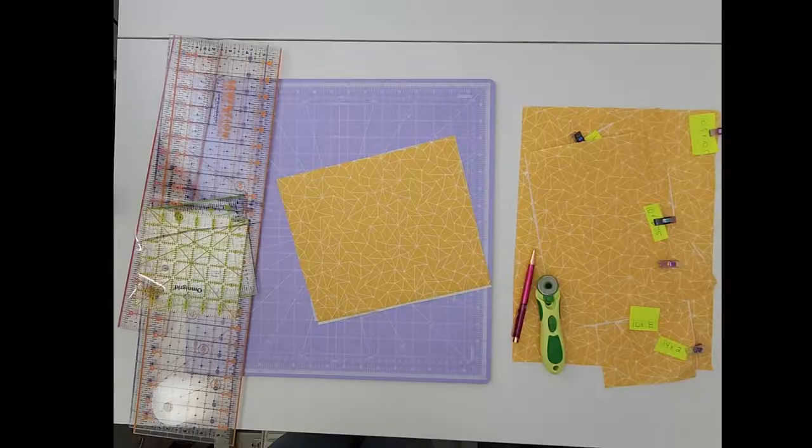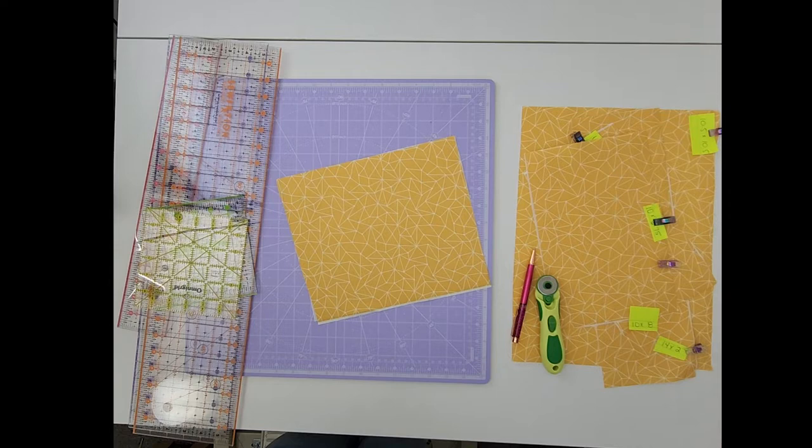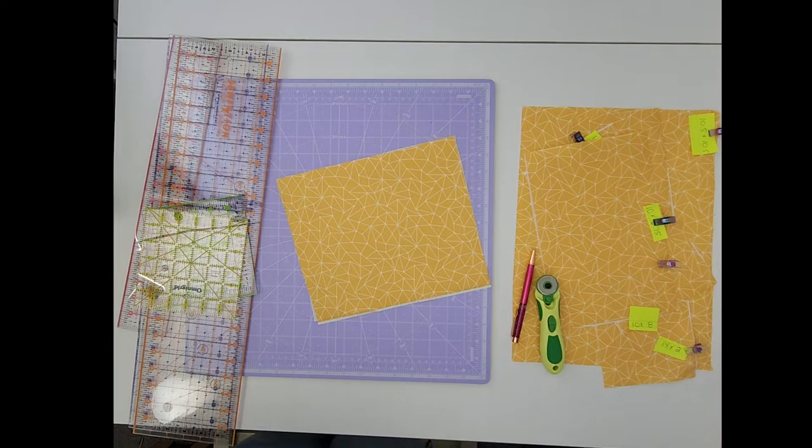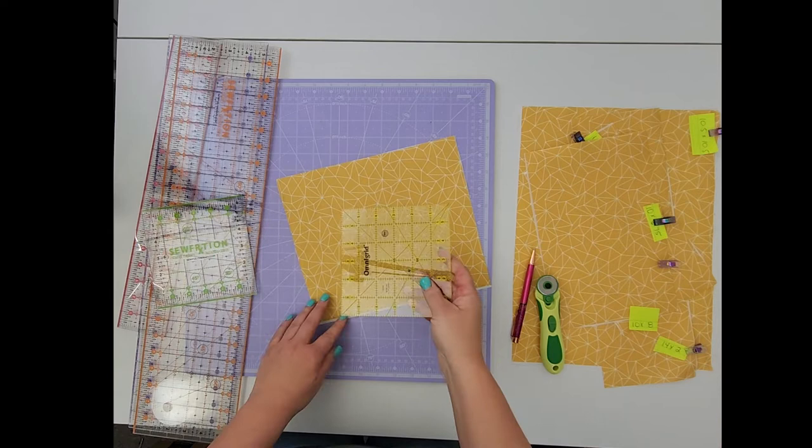Most bag making patterns call for squares or rectangles to be cut for the pattern. We will need a ruler, a marking pen, and a rotary cutter or scissors. I find it super important to use a ruler that has non-slip surface on the back. Rulers without this will just slide around on the fabric, making it harder to cut straight lines.